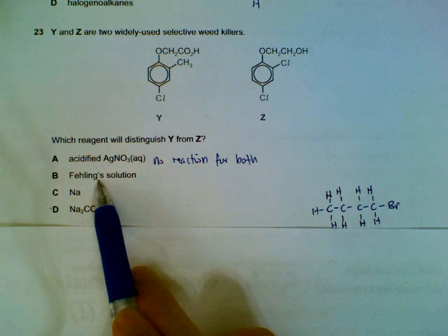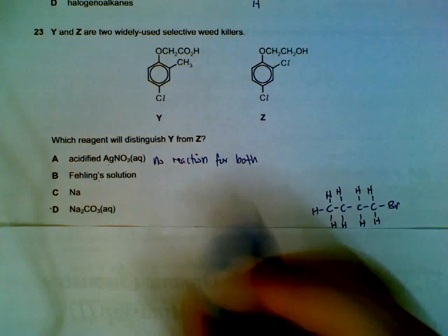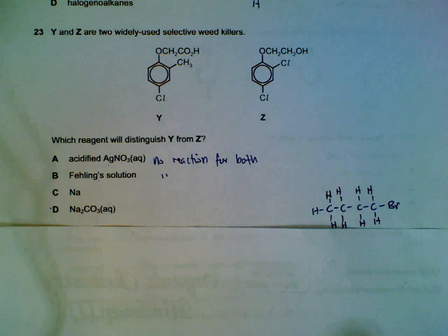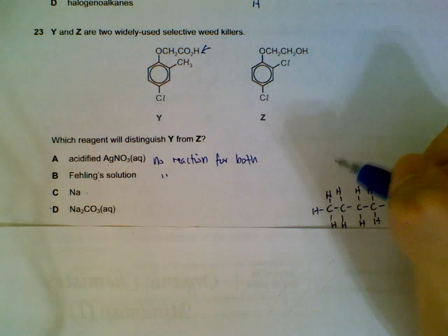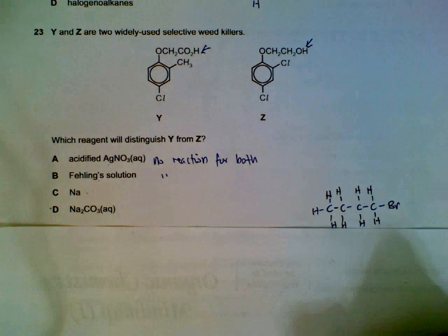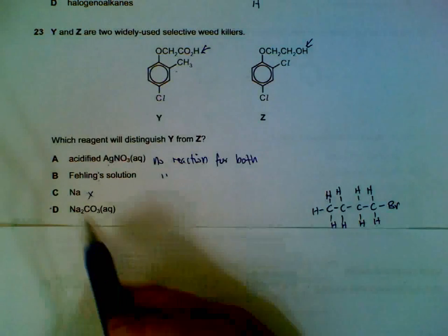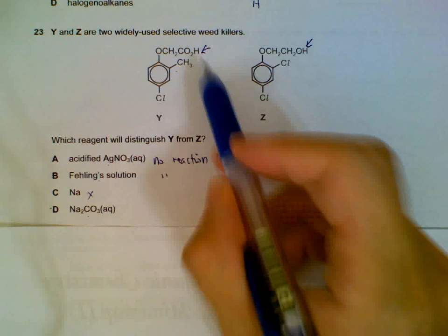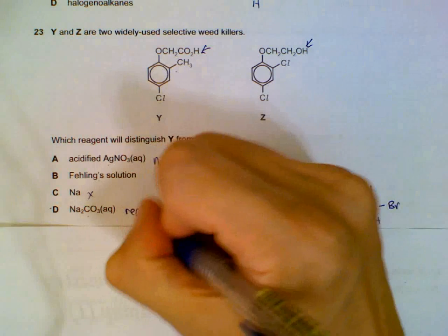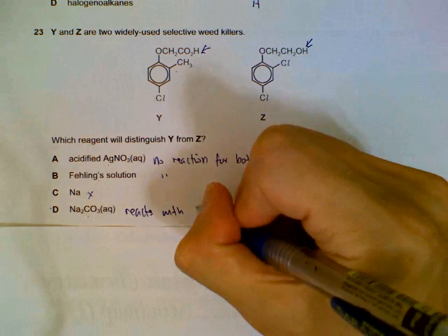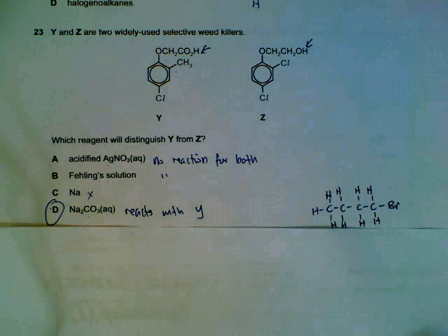Fehling solution. Test for your aldehydes. We do not have aldehydes on both. So there will be no reaction for both also. Sodium will react with your carboxylic acid here. It will also react with your alcohol group here. So we will have hydrogen gas for both. Sodium carbonate will react with your acid. Sodium carbonate will not react with your hydroxyl group. So we will use sodium carbonate to distinguish. We will get our effervescence. The carbon dioxide will come up.